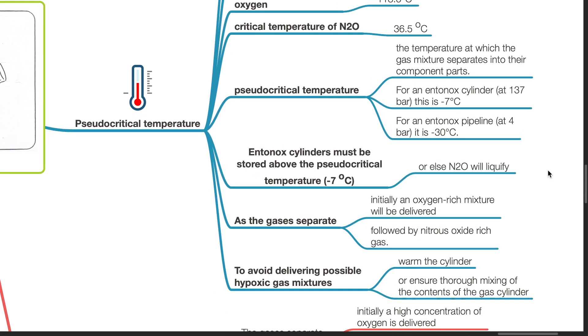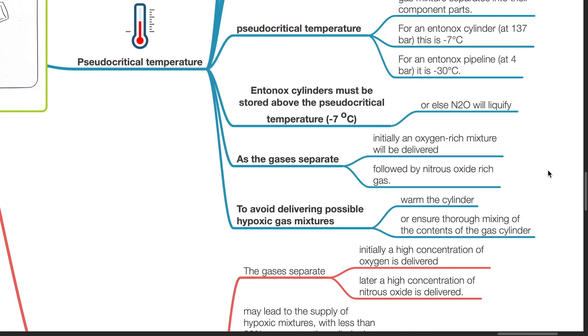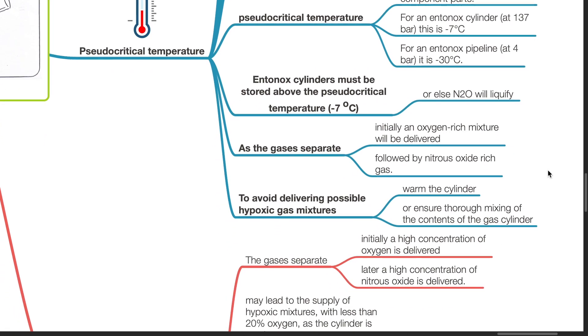Entonox cylinders must be stored above the pseudo-critical temperature of negative 7 degrees Celsius, or else nitrous oxide will liquefy. As the gases separate, initially an oxygen-rich mixture will be delivered, followed by a dangerous nitrous oxide-rich gas which is low in oxygen. To avoid delivering possible hypoxic gas mixtures, warm the cylinder or ensure thorough mixing of the contents.